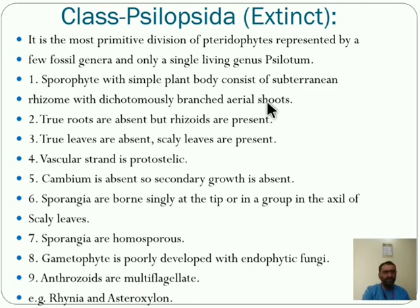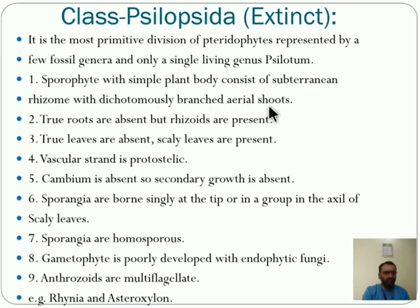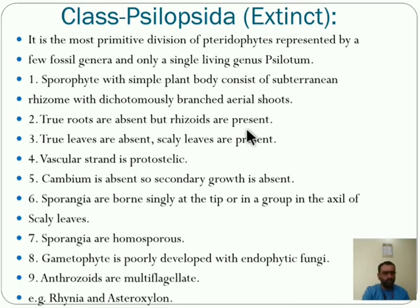When evolution of bryophyte takes place, bryophyte also has rhizome. And this first class of pteridophyte also has rhizome with dichotomously branched aerial shoot. So it is clearly seen that they are the evolved form of the bryophytic plant — bryophyte is the ancestor of the pteridophytic plant. Second, true roots are absent, but rhizoids are present here.